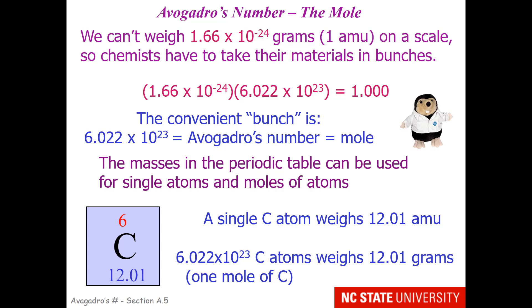So, this is convenient because this means the masses in the periodic table can be used for single atoms and moles of atoms. A single carbon atom is likely to weigh an average of 12.01 atomic mass units. A bunch of carbon atoms, quantified as a mole, is going to weigh 12.01 grams. So, this makes the periodic table useful for dealing with individual atoms or bunches of atoms.